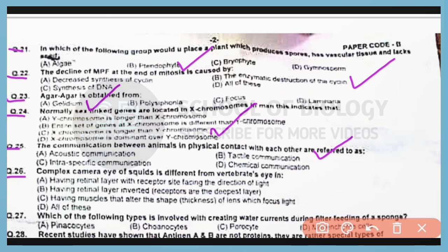Question number 26. The complex camera eye of squids is different from the vertebrate eye in having muscles that alter the shape or thickness of lens which focus light. Correct answer is option C.